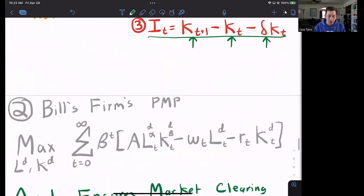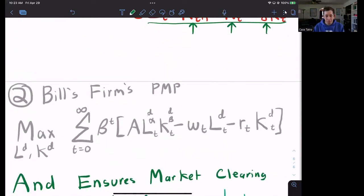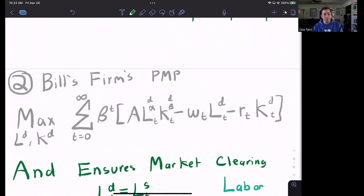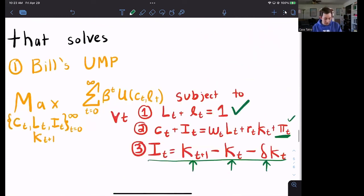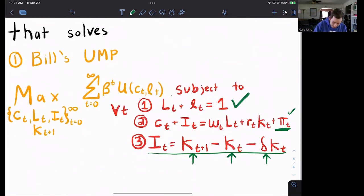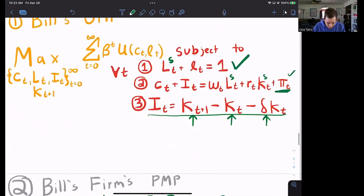We also need to solve Bill's firm's profit maximization problem. Here's the profit maximization problem on an infinite horizon, where this time discount is the same as we've seen before. Notice that this is labor demanded and capital demanded, labor demanded and capital demanded, whereas Bill is supplying labor. Up here, this should be labor supplied. This is labor supplied and this is capital supply.